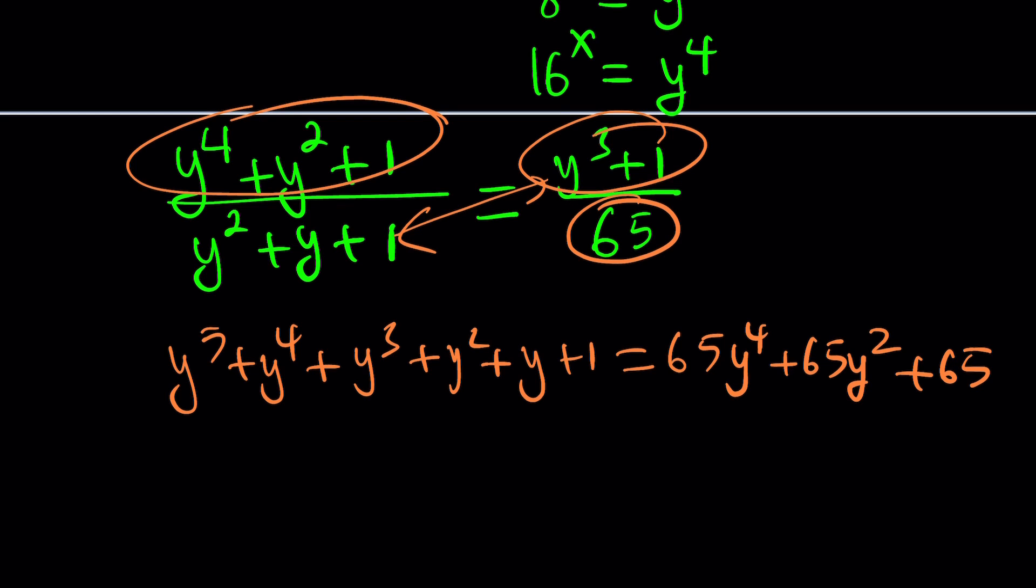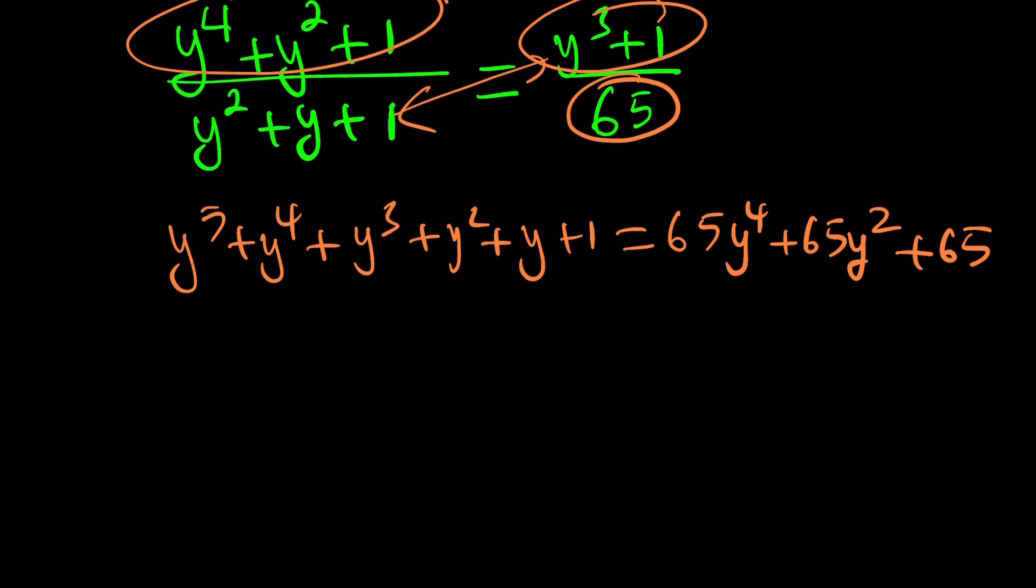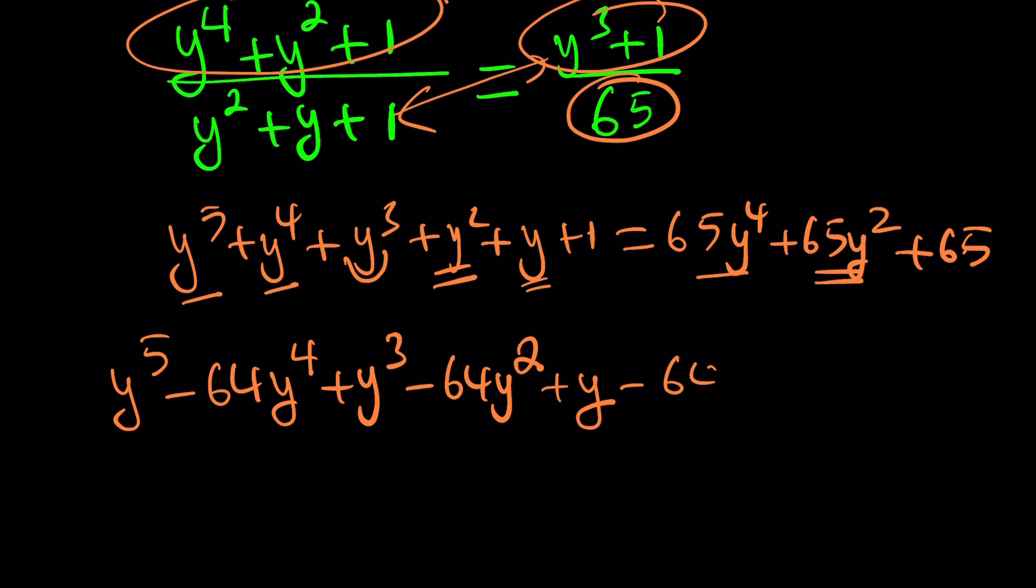Let's put everything on the same side. We have y^5, and then 1 minus 65, that's -64y^4. Then we have the y^3 which is the only one, and then y^2 minus 65y^2 is -64y^2. And 1 minus 65 is -64 again.